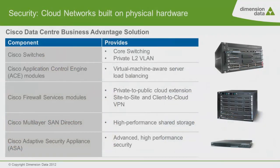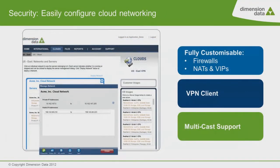Security. Dimension Data is committed to providing a highly secure cloud environment for your applications. All of our networking is Cisco hardware-based, allowing us to provide a high level of security and sub-millisecond latency guarantees. We use Cisco data center business advantage solutions, including Cisco Catalyst 6500 switches for the core, Cisco MDS 9000 series multi-layer directors for storage access, Cisco ACE application control engine modules, and Cisco firewall services modules to provide multiple layers of defense. We've completely automated the configuration of Cisco-based networking to allow granular customer control and flexibility.